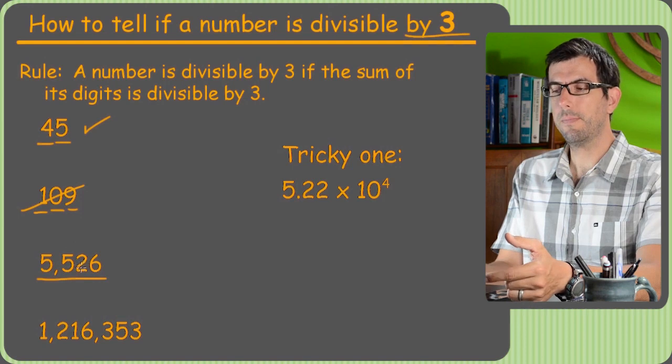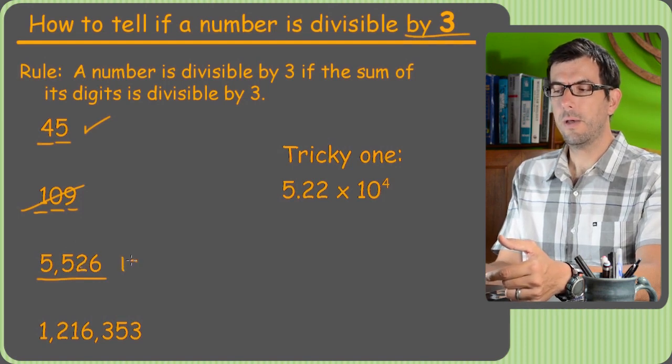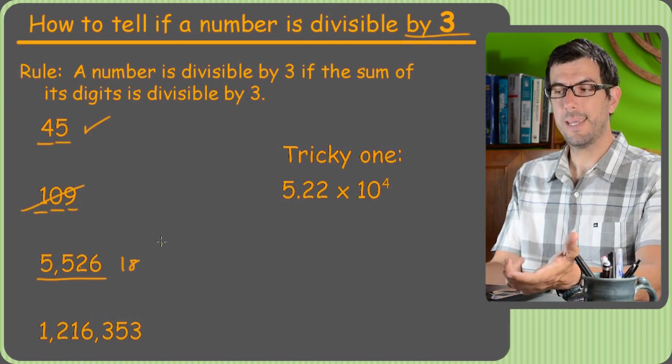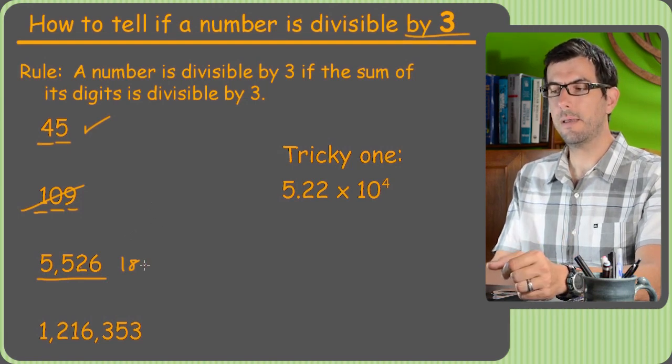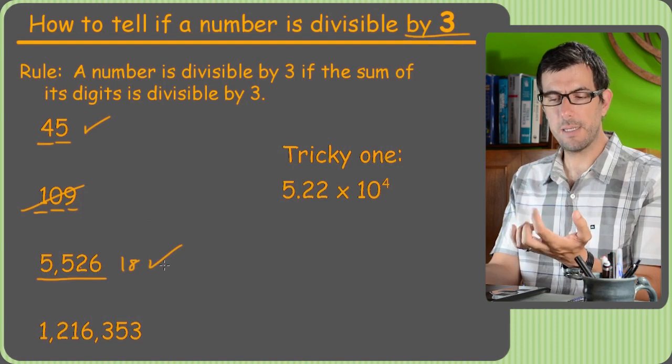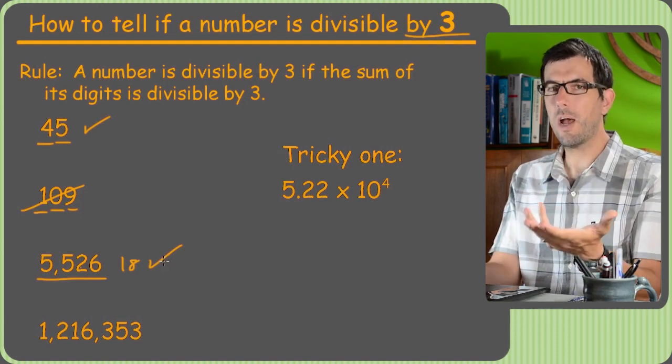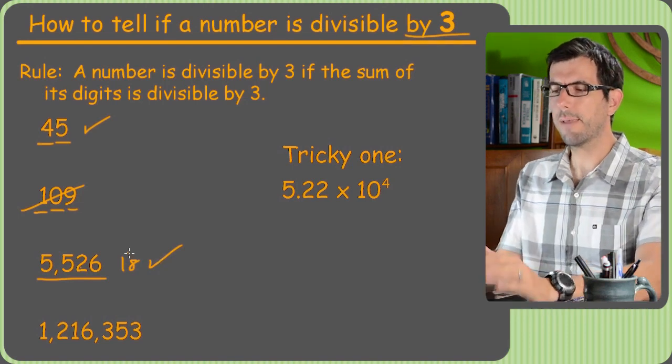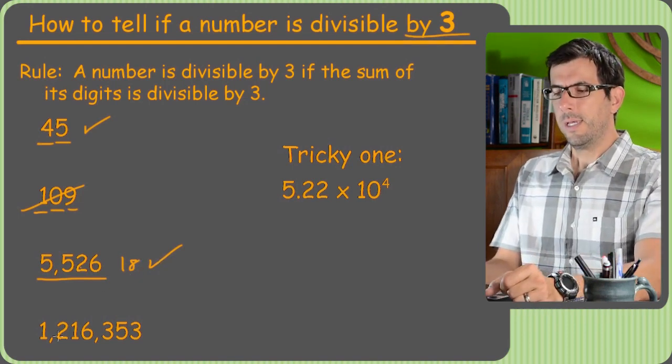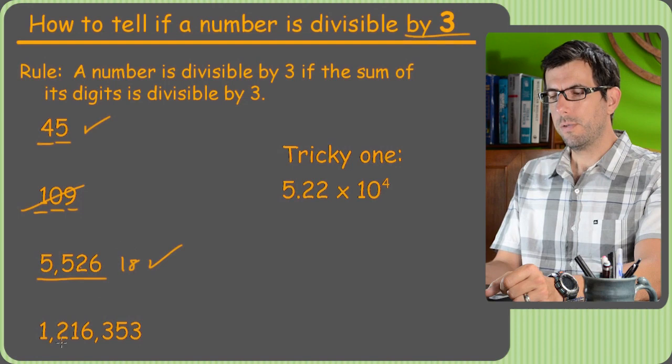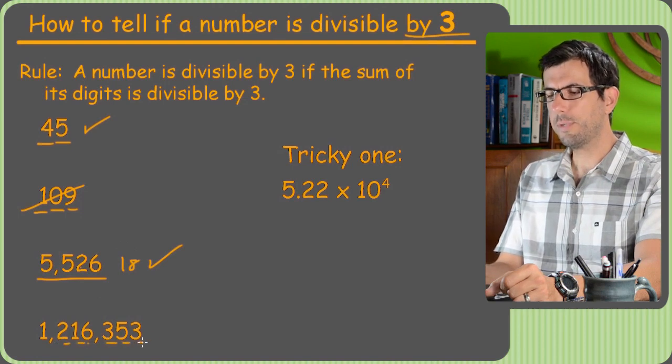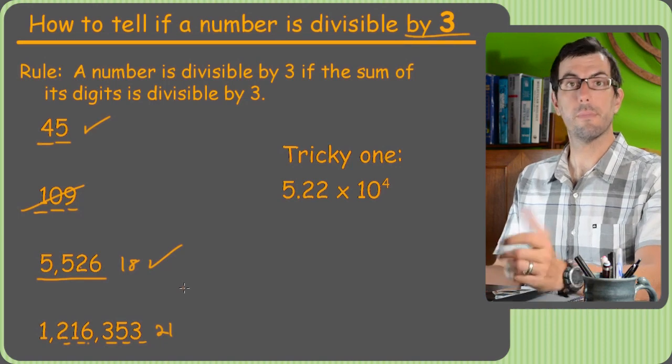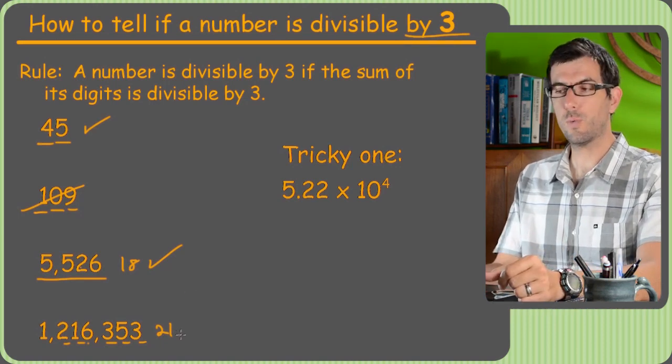You can see how great this is. Because 45, you might have known that 3 times 15 is 45. You definitely didn't know whether this number is divisible by 9 or by 3. But we can just add them up. 5 plus 5 is 10. Plus 2 and 6 is 18. Got to know your times tables. Is 18 divisible by 3? Yeah, 3 times 6 is 18.